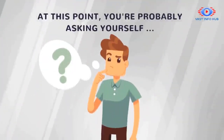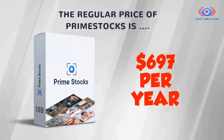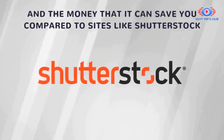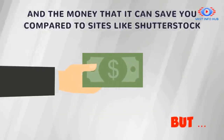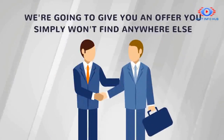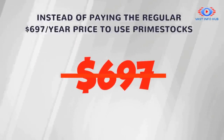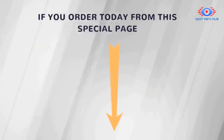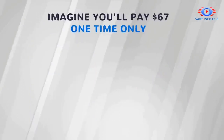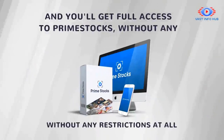At this point, you're probably asking yourself: how much does Prime Stocks cost? The regular price of Prime Stocks is $697 per year, which is actually a bargain considering everything it does and the money it can save you compared to sites like Shutterstock, which charge hundreds of dollars per stock media. But because you found us through this special offer running for a limited time, instead of paying the regular $697 a year, if you order today from this special page, you can get Prime Stocks for the low one-time price of just $67 — and get full access without any restrictions at all.